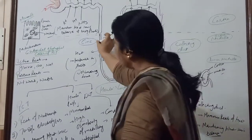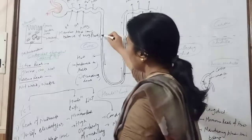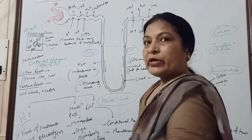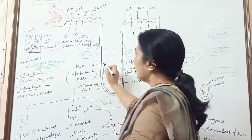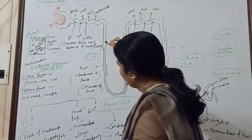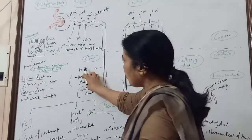There are two limbs. This one is descending limb, and this one is ascending limb. Now, descending limb - this limb is impermeable to salt. There is no salt absorption, but there is maximum water reabsorption.